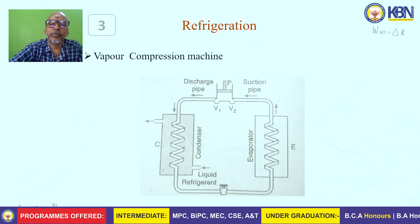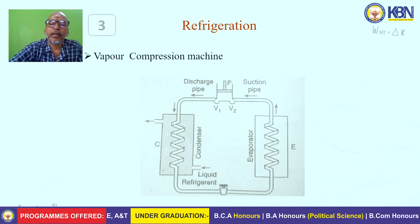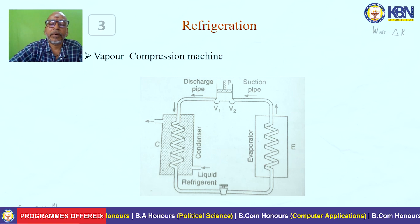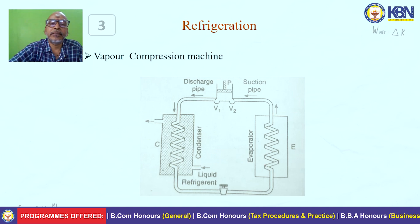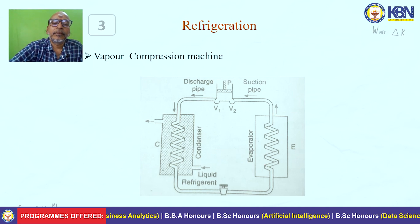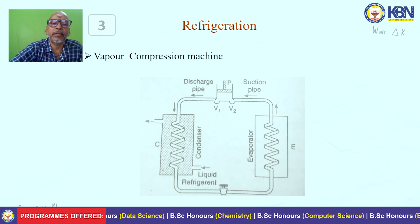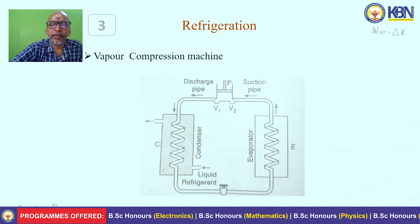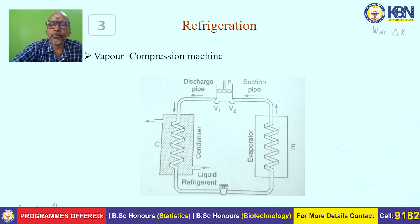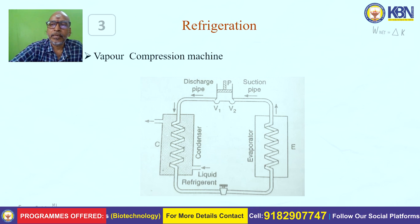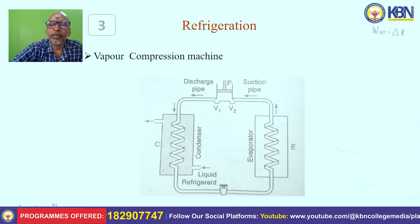The piston P of the compressor is driven by an electric motor. When the piston moves downward, the pressure increases, valve V1 opens and V2 closes, and the refrigerant gas passes through the discharge pipe into the condenser. Due to the high pressure, temperature increases, so it is reduced by passing cold water around the condenser, converting the refrigerant gas into liquid. The regulator valve then reduces the pressure, and the liquid refrigerant passes into the evaporator (enclosure E).